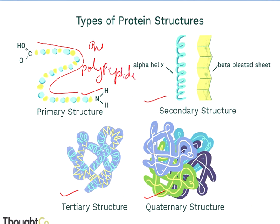In the secondary structure, it is the next level up from primary. It involves the regular folding of regions into specific structural patterns within a polypeptide chain. These are the folded structures — like alpha helices or beta sheets. That is known as the secondary structure of protein.